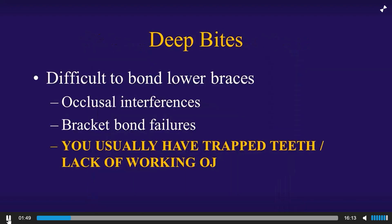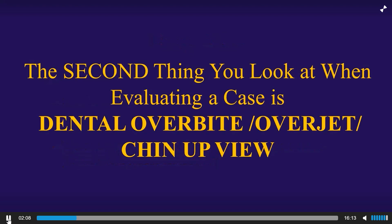When you have a deep bite, it's often difficult to bond the lower brackets without occlusal interferences and bracket bond failures, and you very typically have trapped teeth. You have no working overjet. So the second thing I want you to look at when you're evaluating a case is the overbite, overjet, and chin-up view.